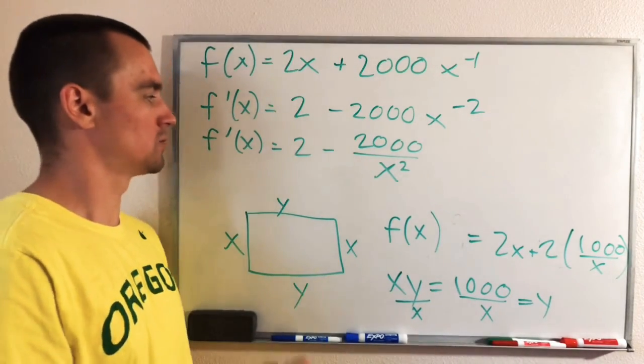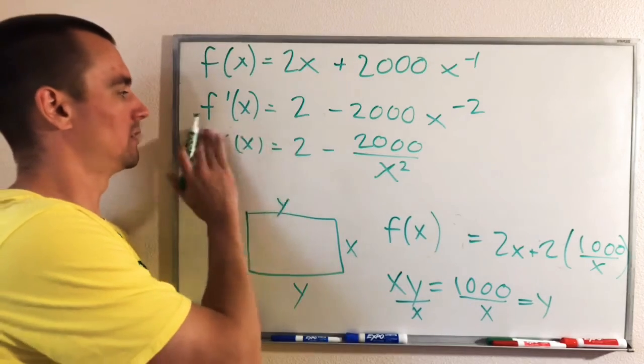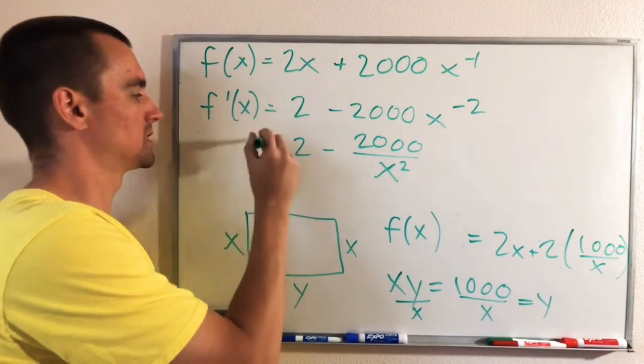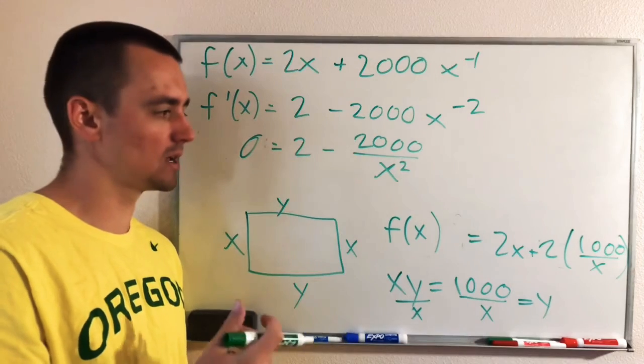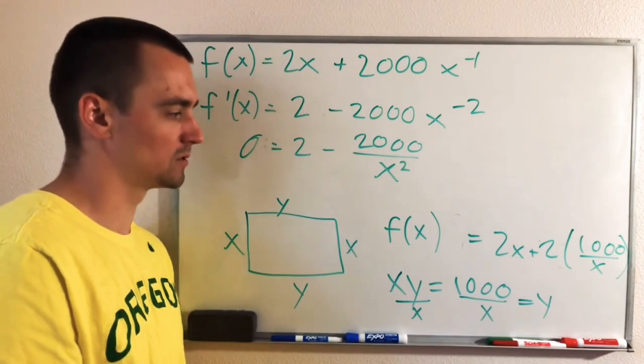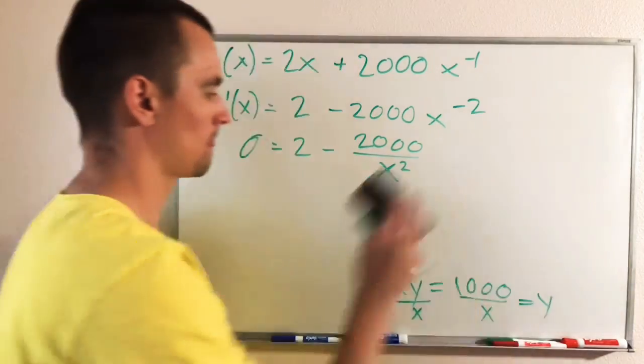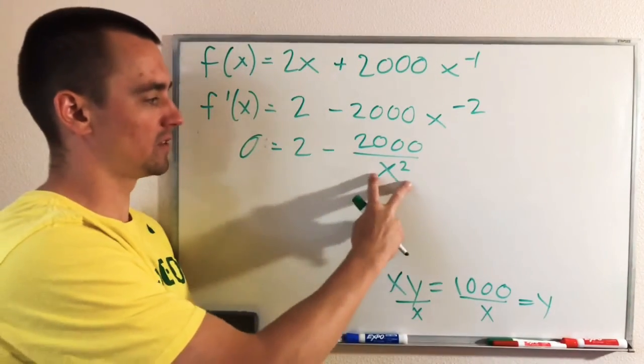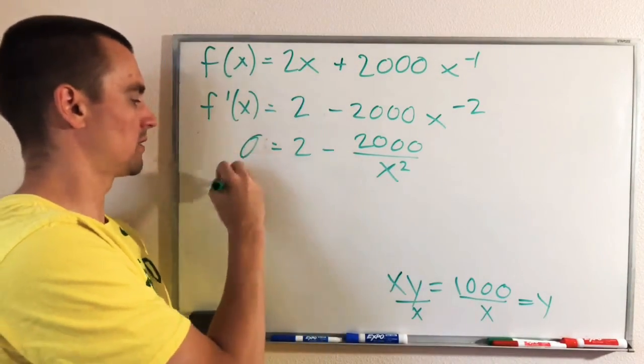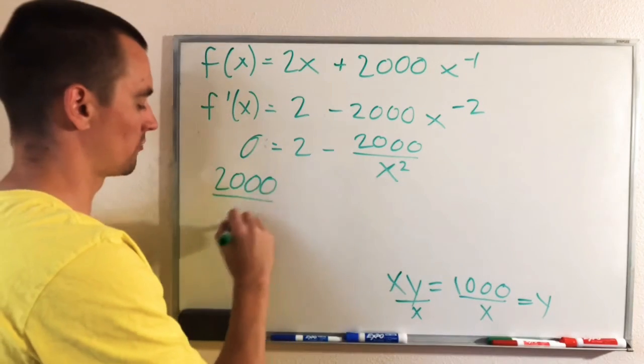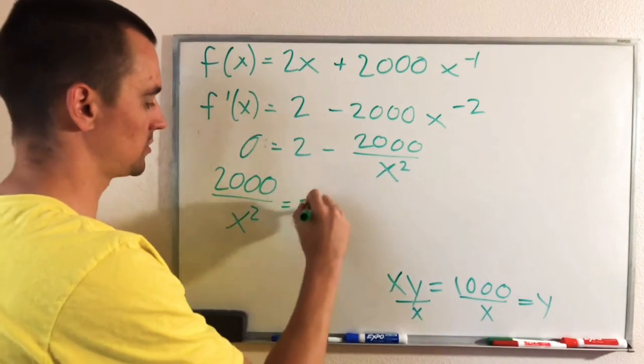So what that means is we just need to figure out where our derivative equals 0. So if we just set this whole thing to 0, then we can solve for X, and that'll tell us our critical number. So let's do that. First, we can just add this term over to the other side. So that'll give us 2,000 over X squared equals 2.